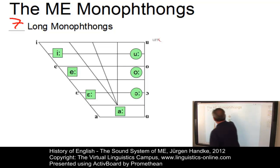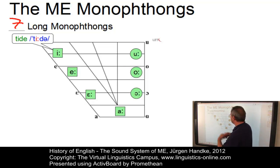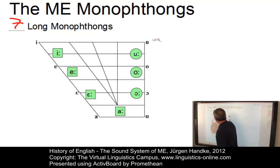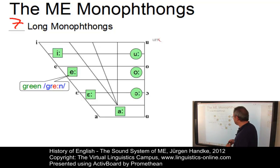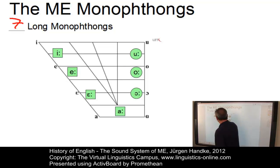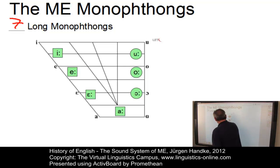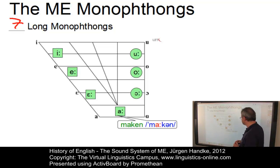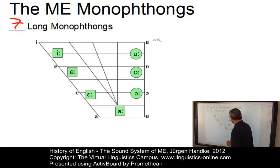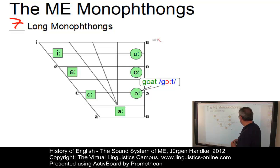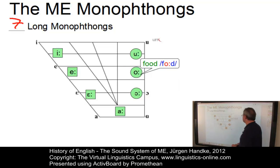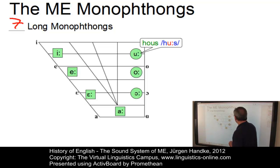Here are the long monophthongs. The high front vowel /iː/ as in 'tīde', present-day English 'tide'. The mid-high front vowel /eː/ as in 'grēne', present-day English 'green'. The mid-low front vowel /ɛː/ as in 'mēte', present-day English 'meet'. The low central vowel /aː/ as in 'māken', present-day English 'make'. The mid-low back vowel /ɔː/ as in 'gōt', present-day English 'goat'. The mid-high back vowel /oː/ as in 'fōd', present-day English 'food'. And finally, the high back vowel /uː/ as in 'hūs', present-day English 'house'.